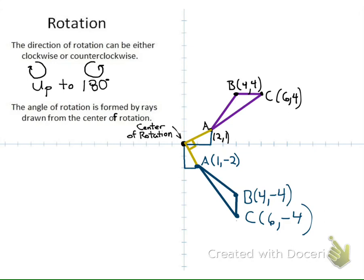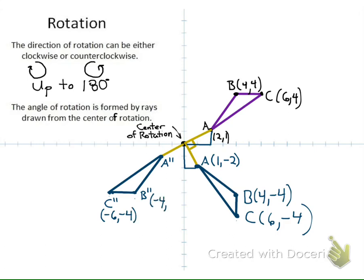It'd be good to just trace this and then rotate your paper so you can see it rotates about that center of rotation. Now let's say we want to go 180 degrees. I went over 2, up 1 — I do that same thing in the opposite direction, giving me a straight angle and my new point A double prime. For B, I went right 4, up 4 — I go left 4, down 4, giving B double prime. And for C, I went over 6, up 4 — I go left 6, down 4, giving C. We can see a pattern: we've changed the signs of both the x and y coordinates, and that will work whenever we do a rotation of 180 degrees.